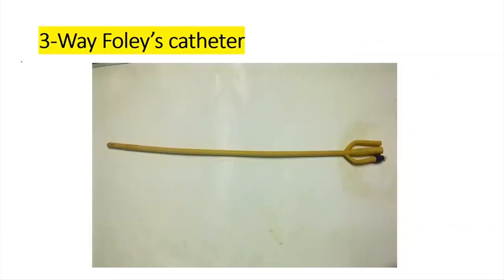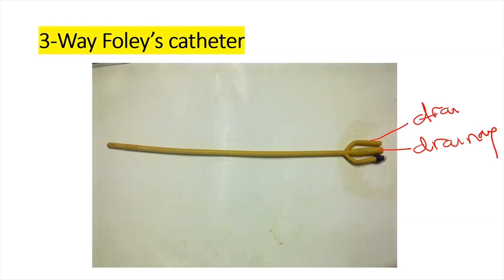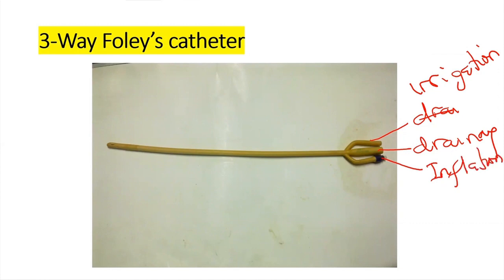This image shows a three-way catheter. The three-way catheter has three channels. It has one funnel each for drainage, irrigation, and inflating the balloon. This is the shaft, and this is the eye and the tip of the catheter.